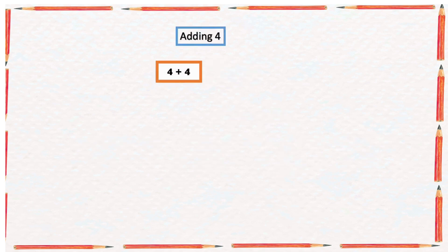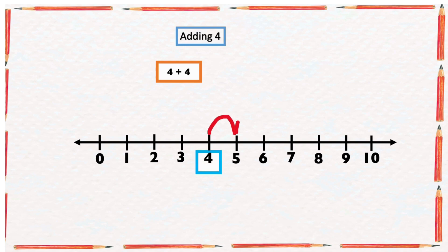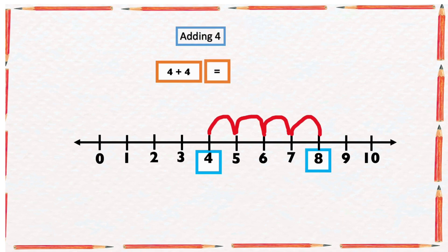Our next example says four plus four. On the number line, we're going to start from the number four and count four numbers forward. We start from four: one, two, three, four. The arrow ended at eight, so the sum of four and four is equal to eight.